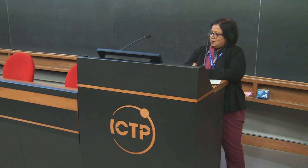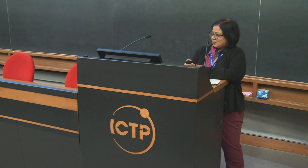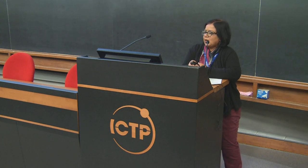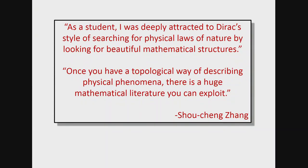He said, as a student, I was deeply attracted to Dirac's style of searching for physical laws of nature by looking for beautiful mathematical structures. And he also said, once you have a topological way of describing physical phenomena, there's a huge mathematical literature that you can exploit. In his Dirac Medal lecture, he mentioned he started as a particle physicist working on field theory, but grew frustrated because the theories he developed lacked experimental tests. He then talked to C.N. Yang, who suggested turning his attention to condensed matter, where it's much easier to find experimental realizations.